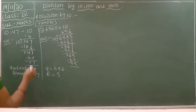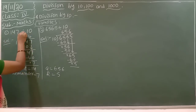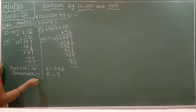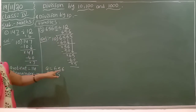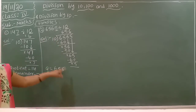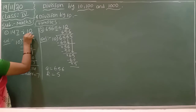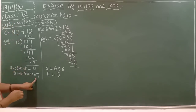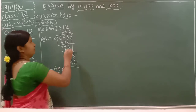Observe one thing. In the given divisor 10, there is only one zero. And in the given dividend, the last digit in the one's place becomes the remainder. The remaining digits become the quotient. Here, 5 is the remainder and 656 is the quotient. So when dividing by 10, the one's place digit of the dividend becomes the remainder and the rest becomes the quotient. This is the division by 10 property.